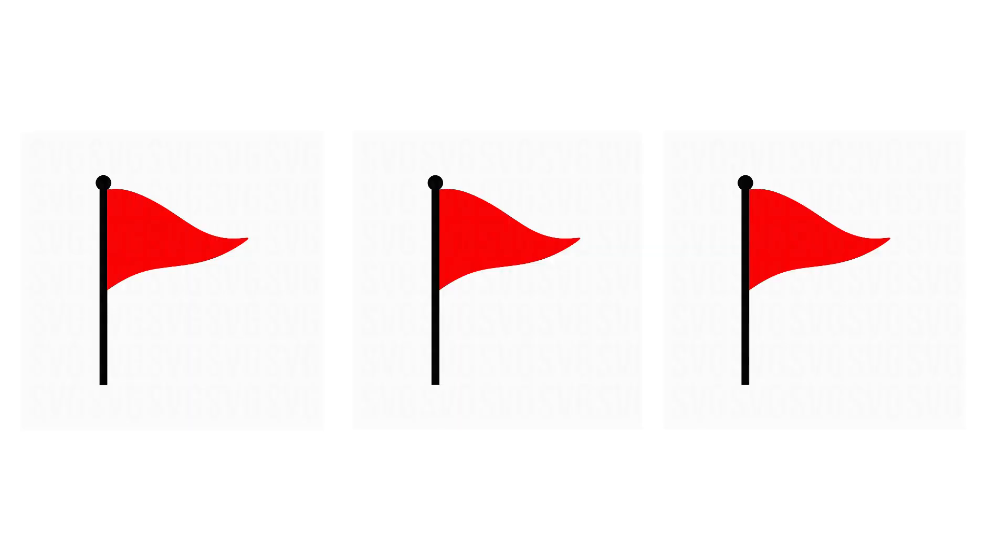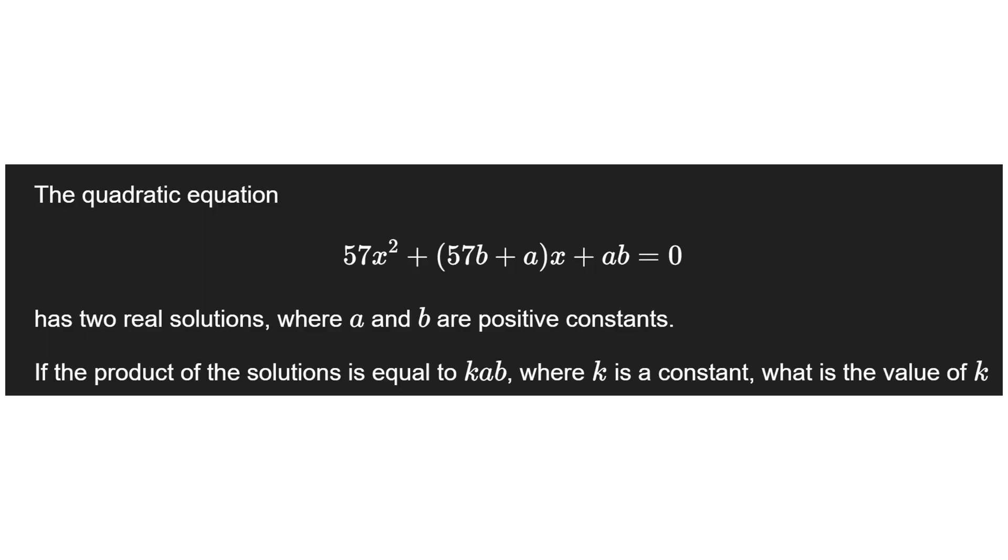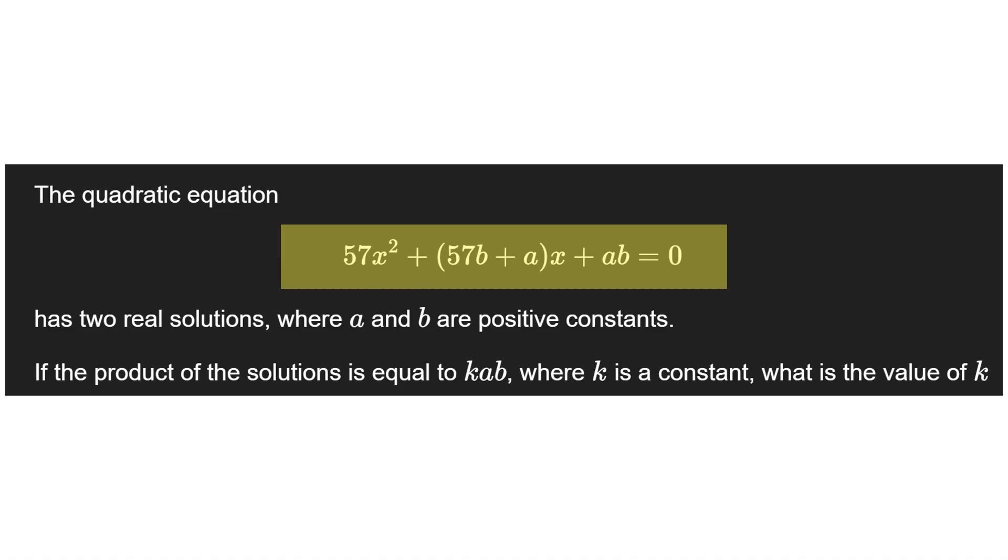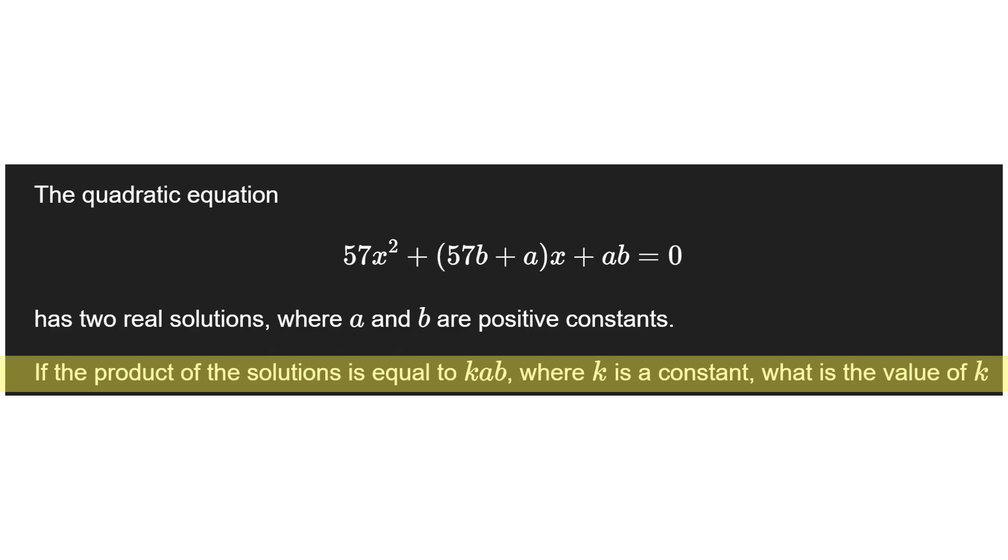So now let's do a super hard problem, the type of problem you flag and come back to. This quadratic equation has two real solutions, where a and b are positive constants. If the product of the solutions is equal to k a b, where k is a constant, what is the value of k?